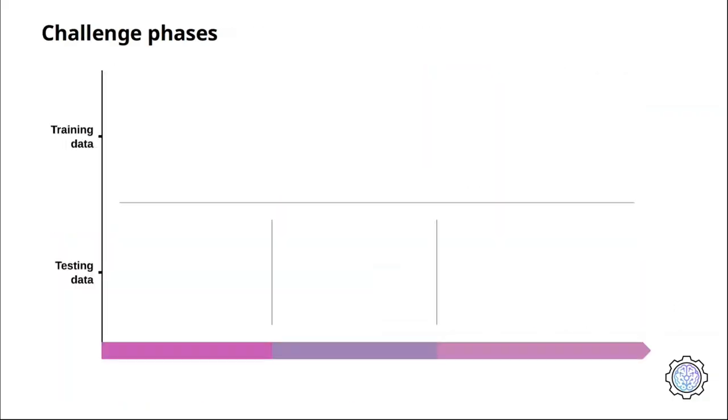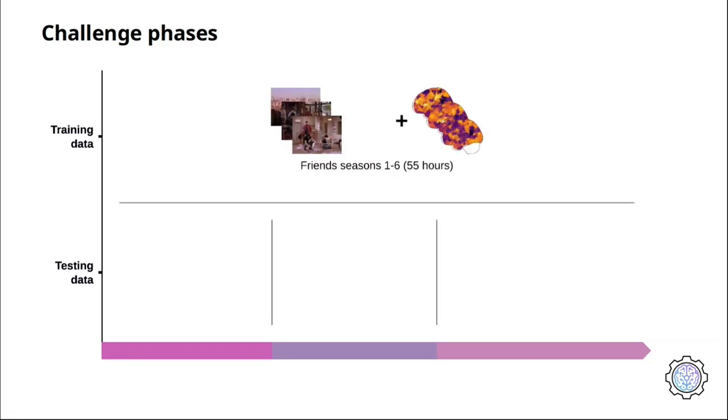The challenge consists of two phases plus a post-challenge phase. The challenge training data is shared across all three phases and consists of 55 hours of movie stimuli and corresponding fMRI responses for each of the four challenge subjects for all episodes of season 1 to 6 of Friends, and 10 hours of movie stimuli and corresponding fMRI responses for movie 10, a collection of four movies including The Bourne Supremacy, Hidden Figures, a live documentary, and The Wolf of Wall Street. You can use these data to train your encoding models.